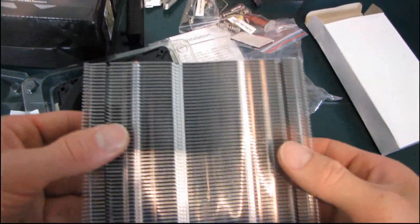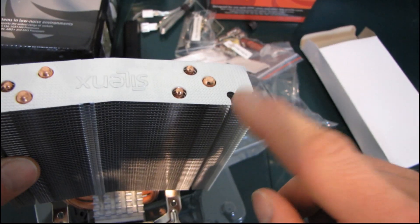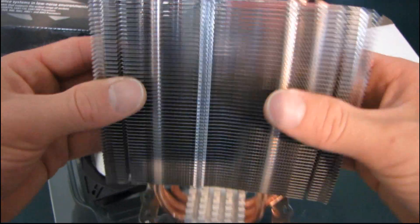Alright, so this is interesting. They've actually got little grommet spots on here for those rubber mounts, but they haven't included them for some reason.